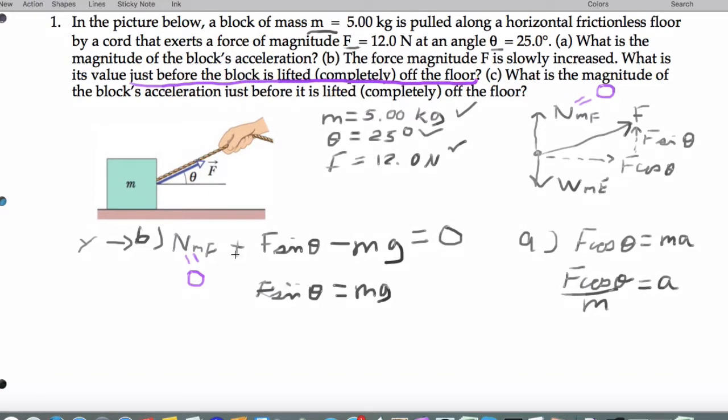For B, I just got that force. Now when I actually want to solve for the magnitude of the force, the value changes from 12 to Mg divided by the sine of theta.